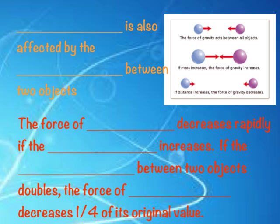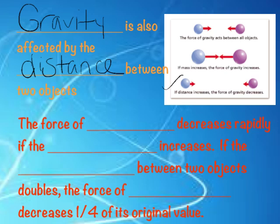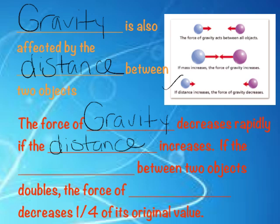There's a third factor: distance. Gravity is also affected by distance. In the picture, the size of the spheres is the same as in the top picture, but the spheres are now farther apart, and because they are farther apart the force of gravity is weaker — the arrow is much shorter. So as we increase the distance, we have weaker gravity. It's the opposite of mass: increase the mass, more gravity; increase the distance, less gravity. The force of gravity decreases rapidly as the distance increases.